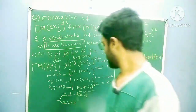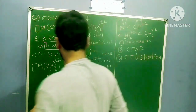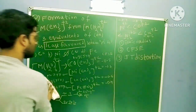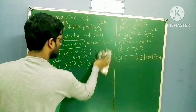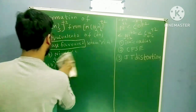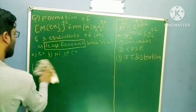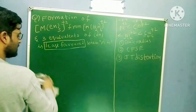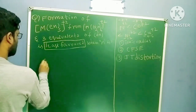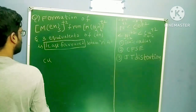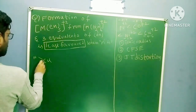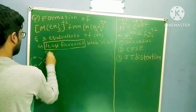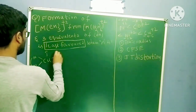You always have to see the stability of the product. This question is actually an application of Jahn-Teller distortion — a very important application. If you remember, [Cu(en)₂]²⁺ — one complex is [Cu(en)₂]²⁺.